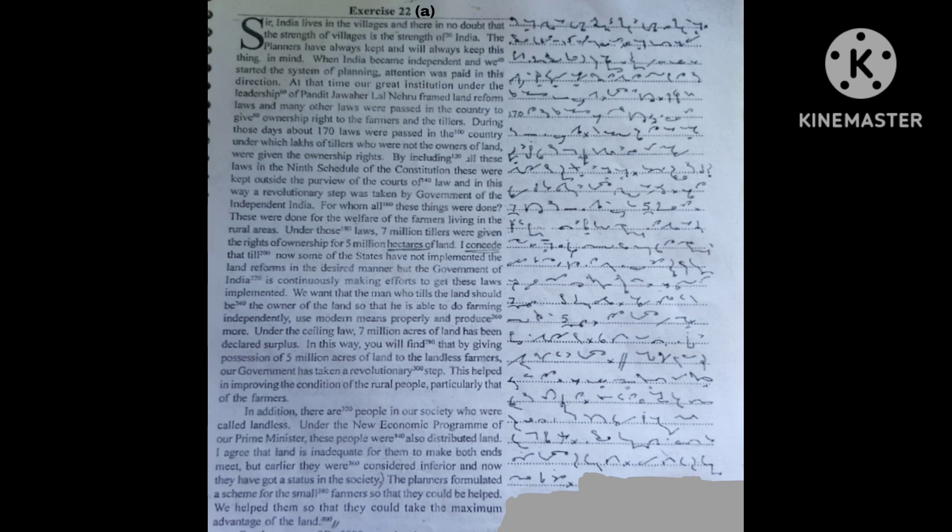Under the ceiling law, 7 million acres of land has been declared surplus. In this way, you will find that by giving possession of 5 million acres of land to the landless farmers, our government has taken a revolutionary step. This helped in improving the condition of the rural people, particularly that of the farmers.